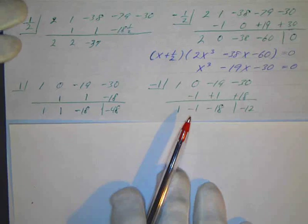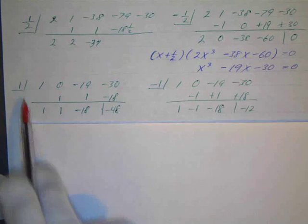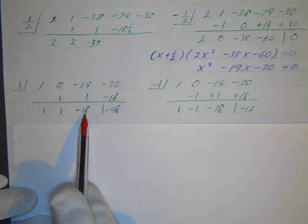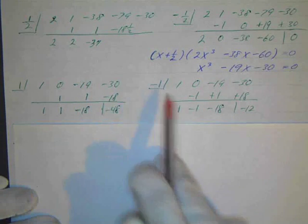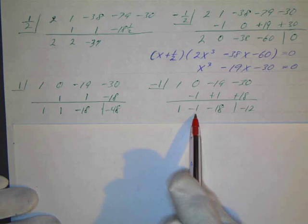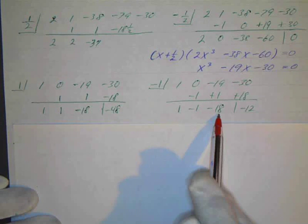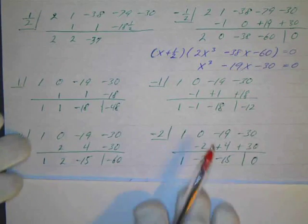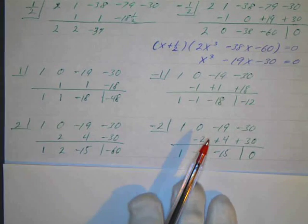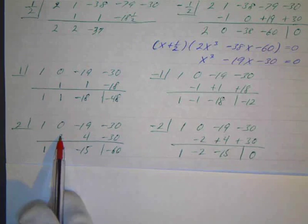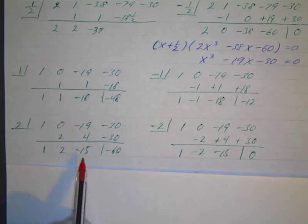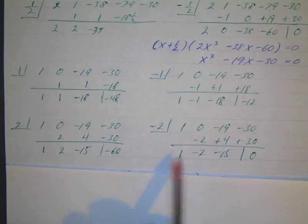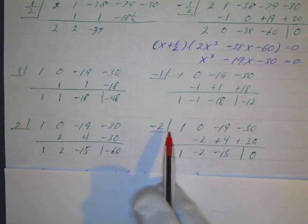So I tried 1: 1, 1, 1, 1, negative 18, negative 48, didn't work. I tried negative 1: 1, negative 1, negative 1, positive 1, negative 18, positive 18, still didn't work. I tried 2: 2, 2, 4, negative 15, negative 30, negative 60. But this is looking more encouraging. So I tried negative 2. And lo and behold, negative 2 did work.